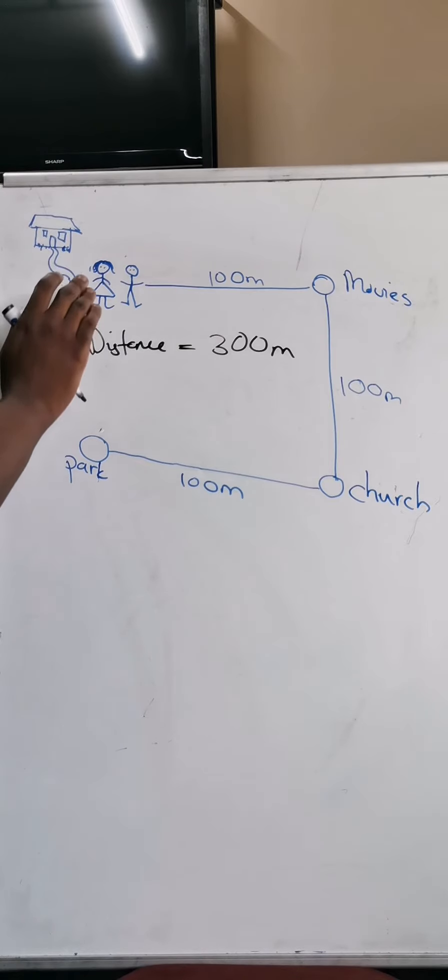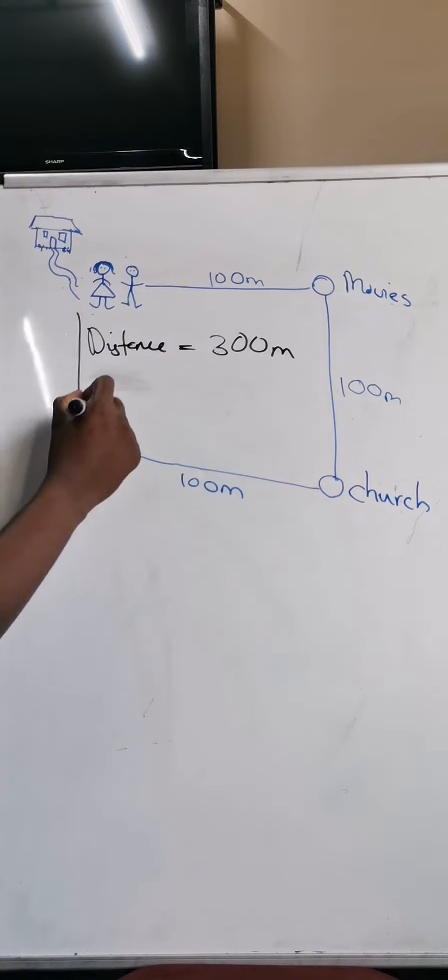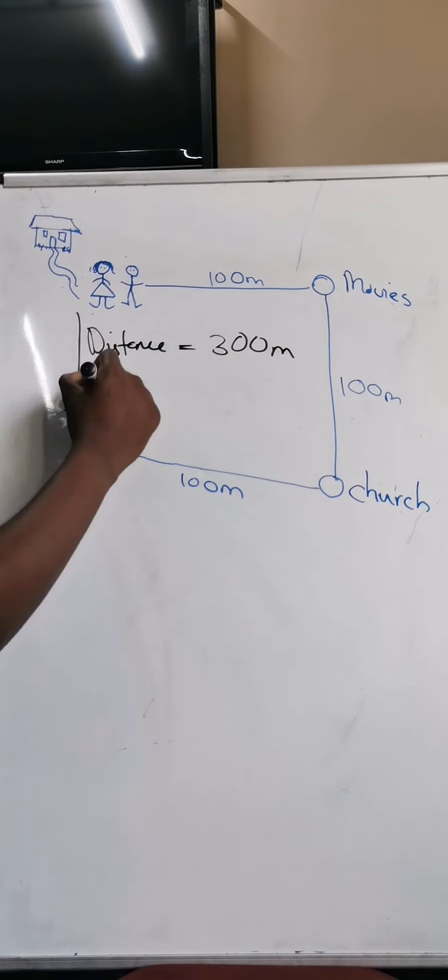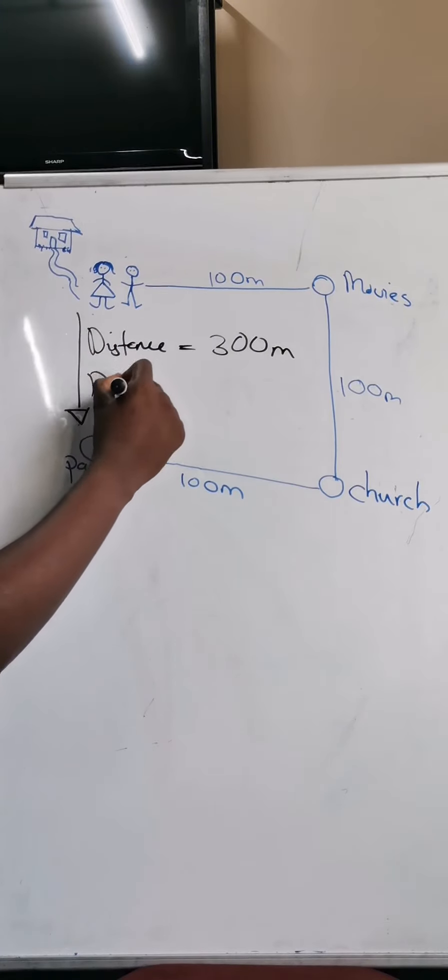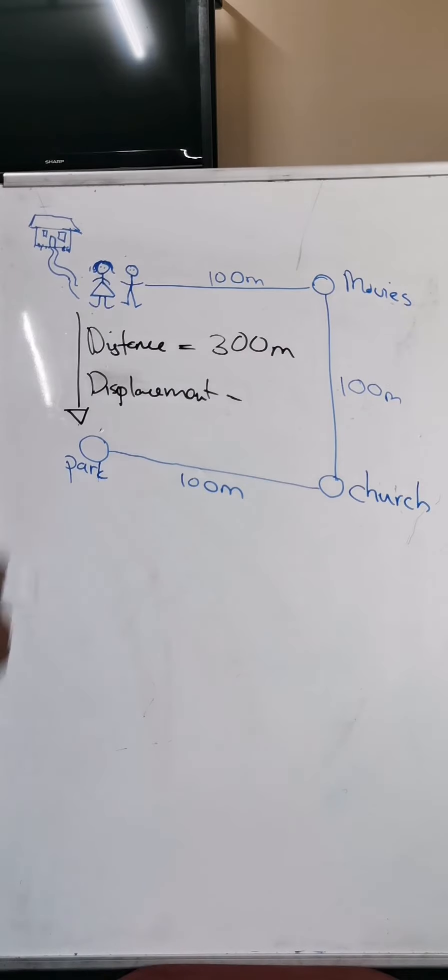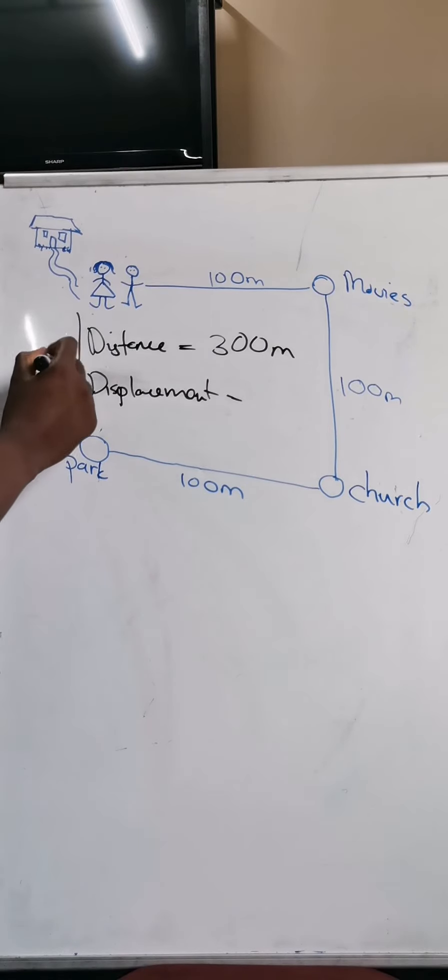Displacement is talking about distance from the place. So from where they started to where they ended, that's what we call our displacement. And our displacement is a straight line, 100, which is 100 meters.